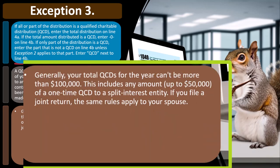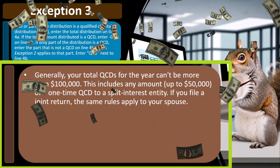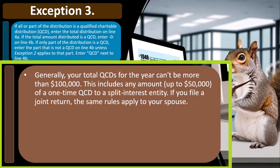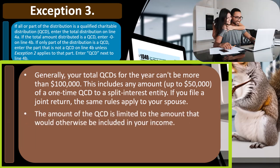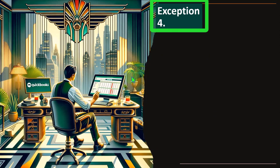Your total qualified charitable distribution for a year can't be more than $100,000. This includes any amount up to $50,000 of a one-time QCD to a split interest entity. If you file a joint return, the same rules apply to your spouse. The amount of a QCD is limited to the amount that would otherwise be included in your income. If your IRA includes non-deductible contributions, the distribution is first considered to be paid out of otherwise taxable income. See Publication 590-B for more details.